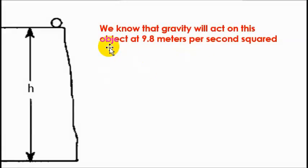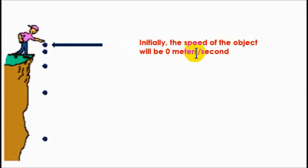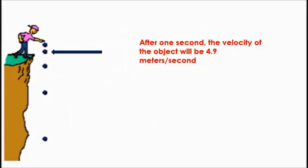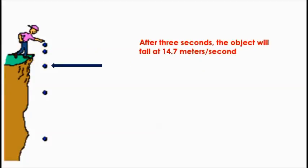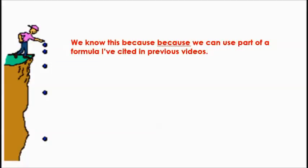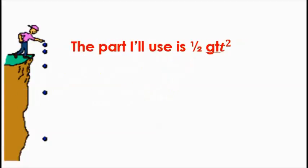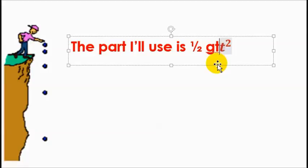So, what do we know? We know that gravity acts on an object at 9.8 meters per second squared. So, what does that mean? In layman's terms, initially the speed of the object will be zero. After one second, the velocity of an object will be 4.9 meters per second. After three seconds, 14.7 meters per second. So, we know this because we can use a part of a formula that I cited in a previous video. The part I'll use is 1/2 gt^2.